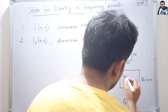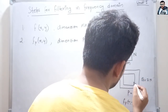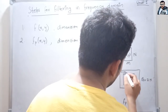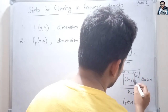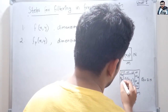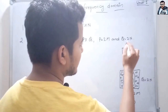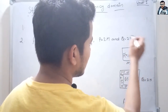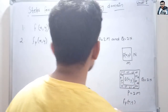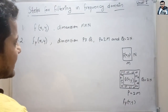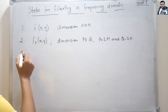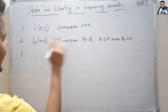In the padded image, the original image f(x, y) is placed and we pad zeros on all sides to make its dimension P×Q. This is the second step.